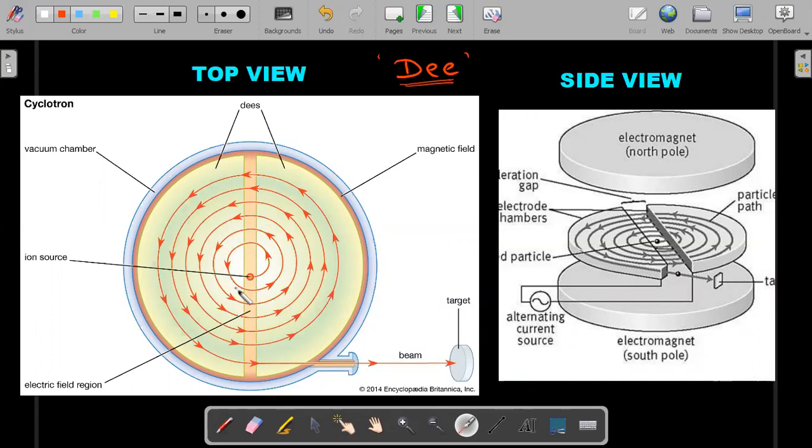So during every semicircular path, obviously the speed has increased due to the electric field in the gap. So the radius would increase. But during that circular path, the speed won't change. So each of these semicircles, I can consider them as their own uniform circular motions. So as this one keeps spiraling out in this particular D, it will finally get ejected. And this fast moving beam would be used in some other experiments. This is a very important particle accelerator, as it is called. The cyclotron is called as a particle accelerator.